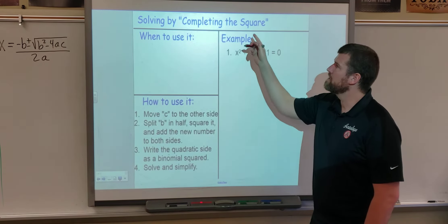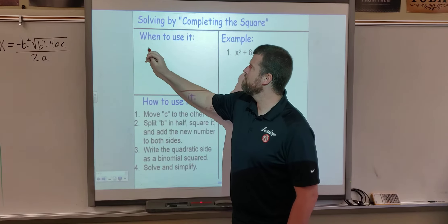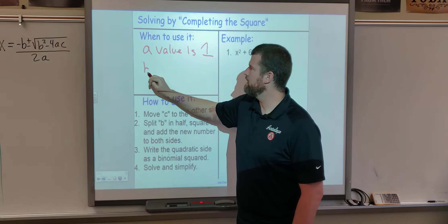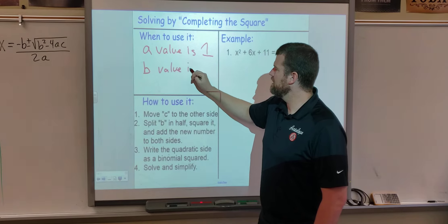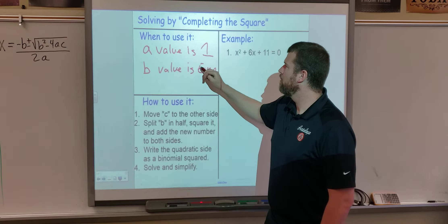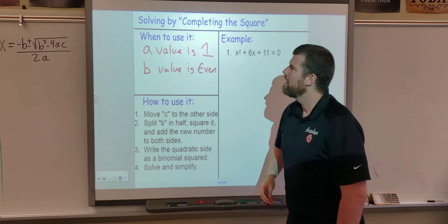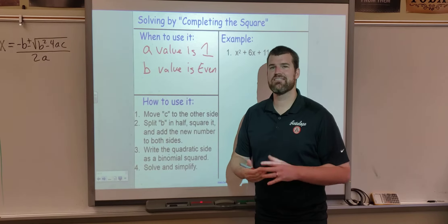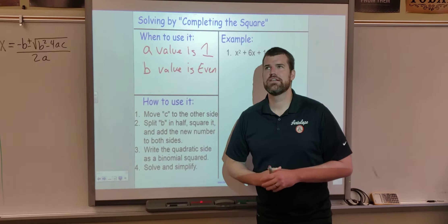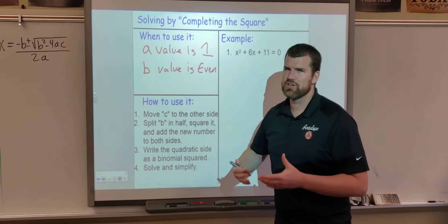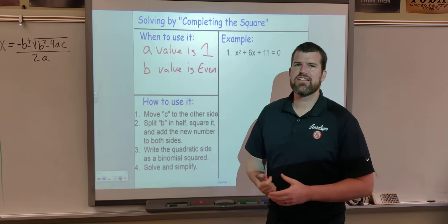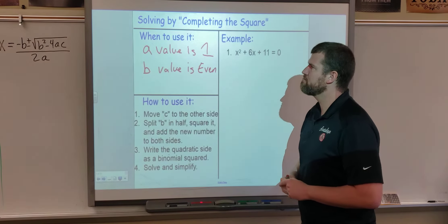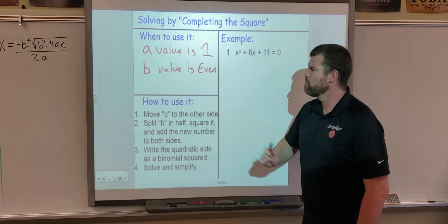Completing the square we can use basically anytime your a value is one and your b value is even, or if we ask you to use completing the square. But if your a value is not one and your b value is not even, I wouldn't recommend it — it becomes more awkward with decimals. We have other ways like the quadratic formula. But if a is one and b is even, we can use completing the square, which is a great method, though it has a few more steps than factoring.